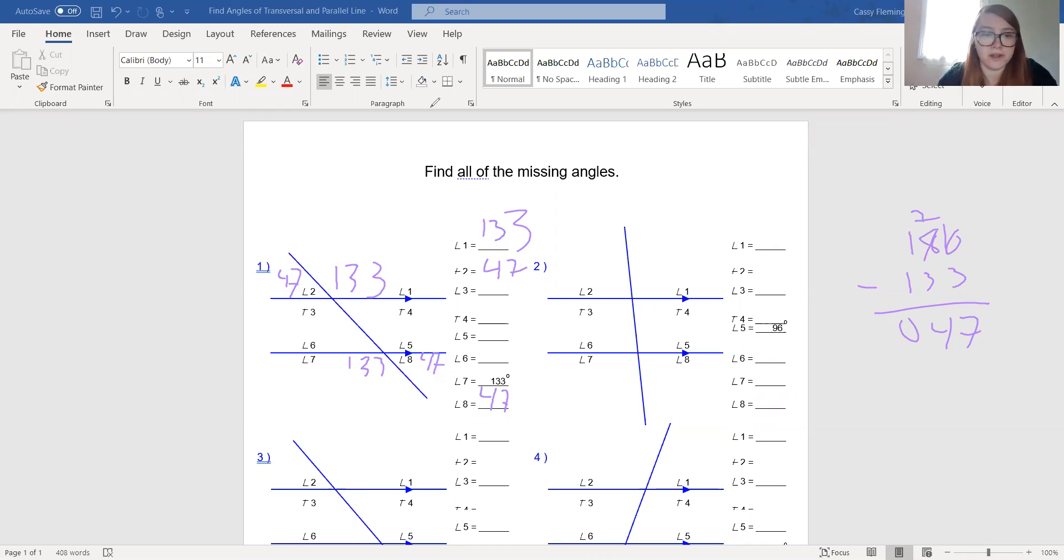So now if we want to find the measure of, let's say this angle, again we know this is a straight line. It's going to have to equal 180 degrees. So let's do 180 minus 133. So that again, it's going to give us 47. So the measure of angle 4 is 47.